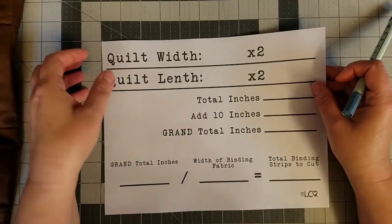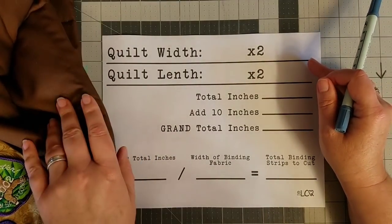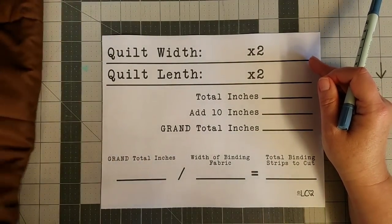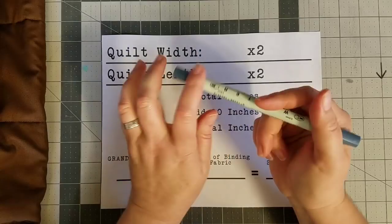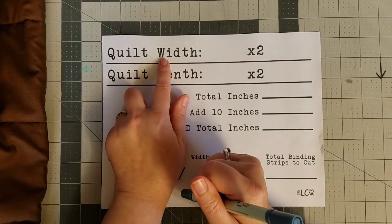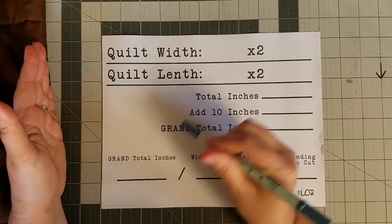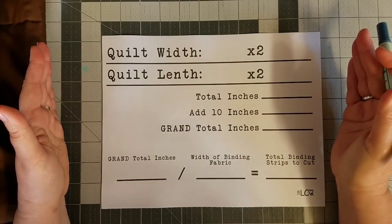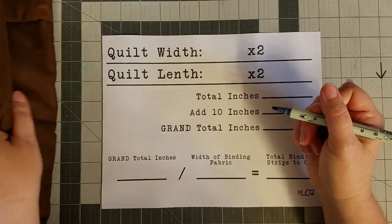So we're going to use this quilt as an example in today's video and we're going to start right up here at the very top. So what I like to do is I like to take my quilt width, and that's the total number of inches from the left side of my quilt to the right side of my quilt, and I write it in this space here. So this quilt here is 45 inches wide.